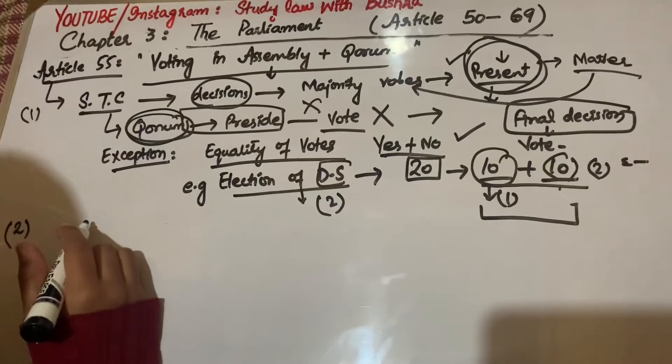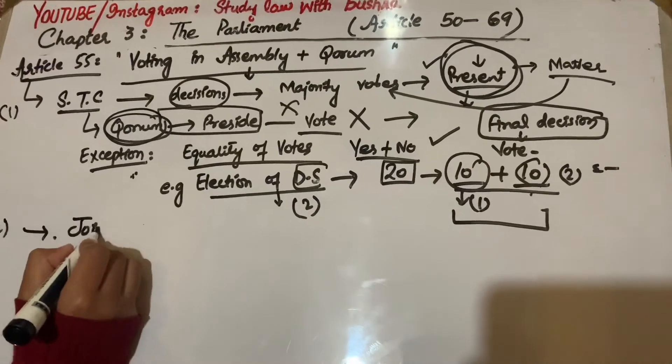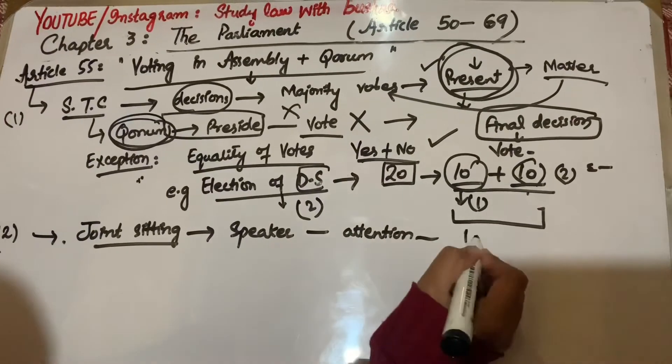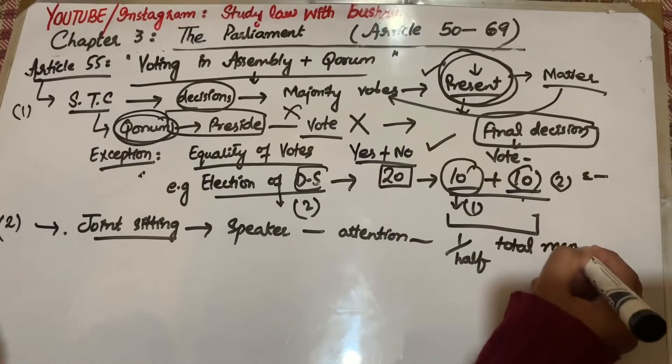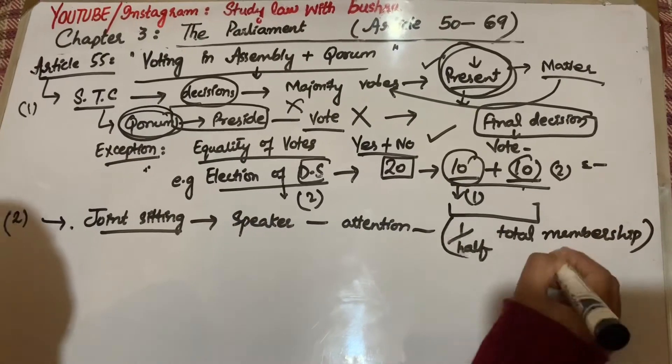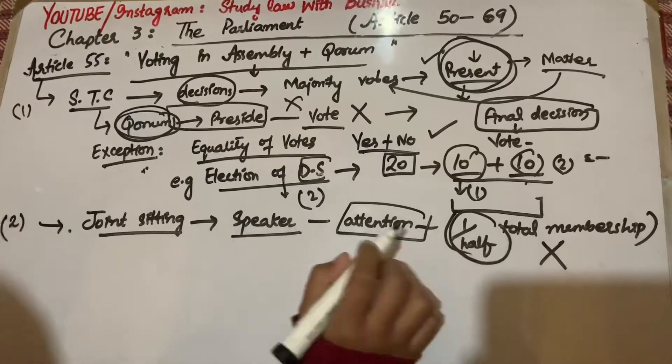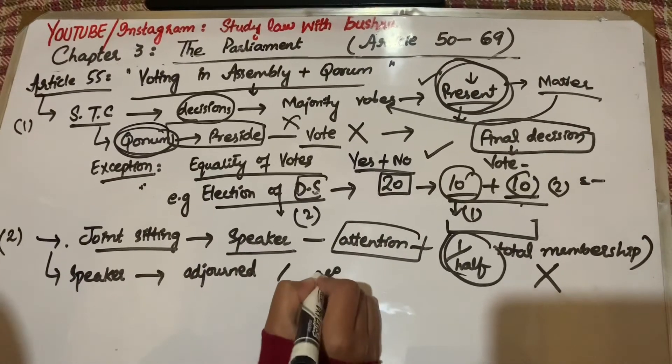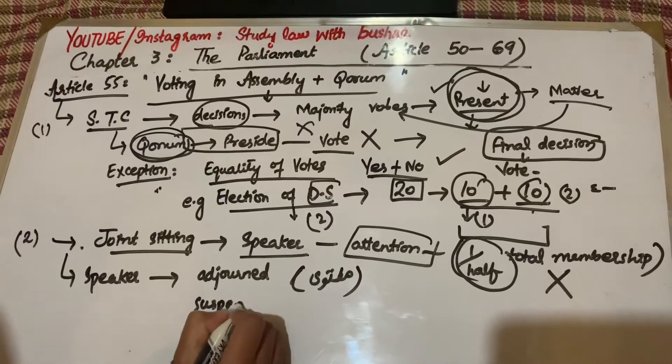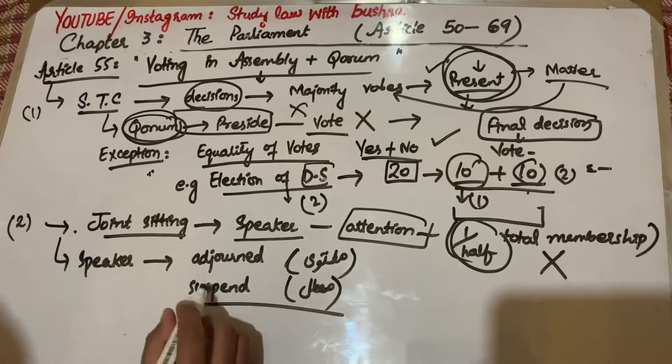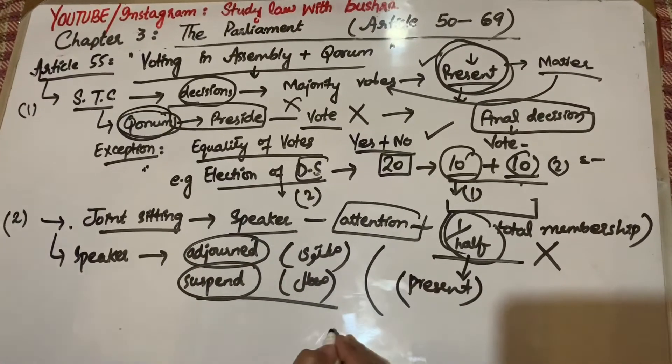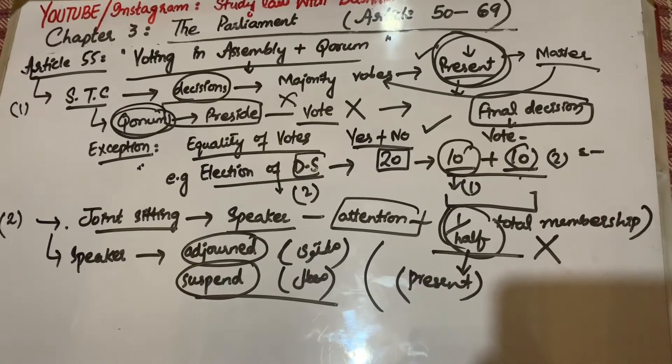Clause 2 says that if at any time the Speaker of National Assembly's attention is drawn to the fact that less than one-fourth of the total membership of assembly is present, the Speaker has the right to either adjourn the assembly or suspend it until at least one-fourth of the membership is present. So this was our Article 55.